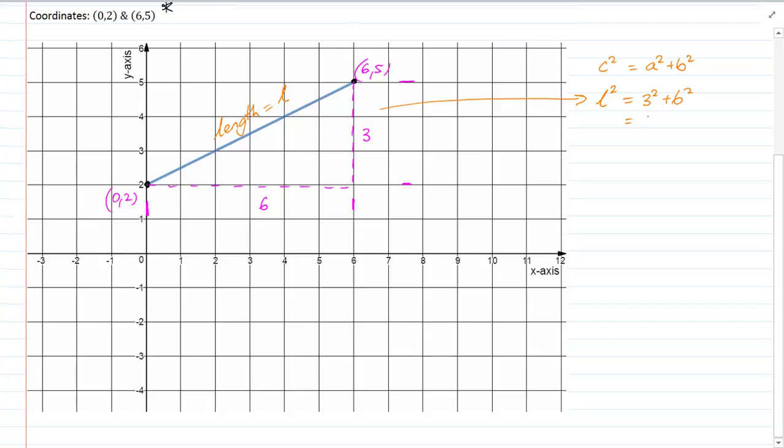So now I can simplify this, 9 plus 36, that's equal to 45. So L squared is equal to 45 and L is equal to the square root of 45. Now in most cases at this stage,